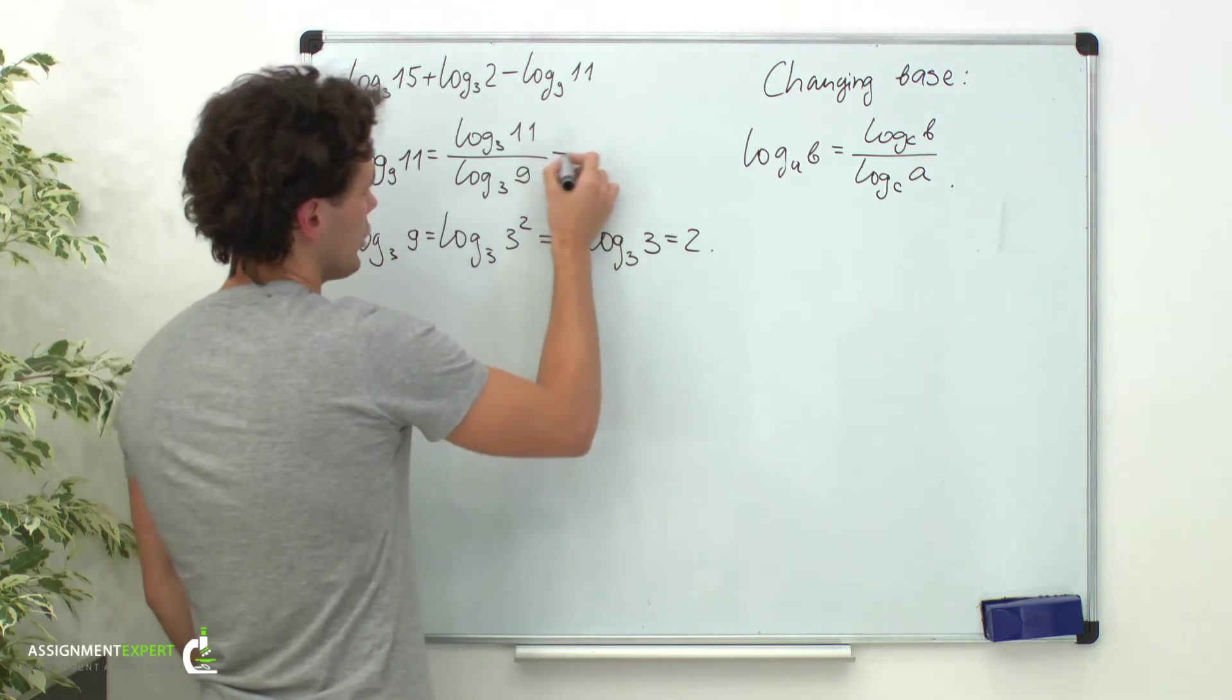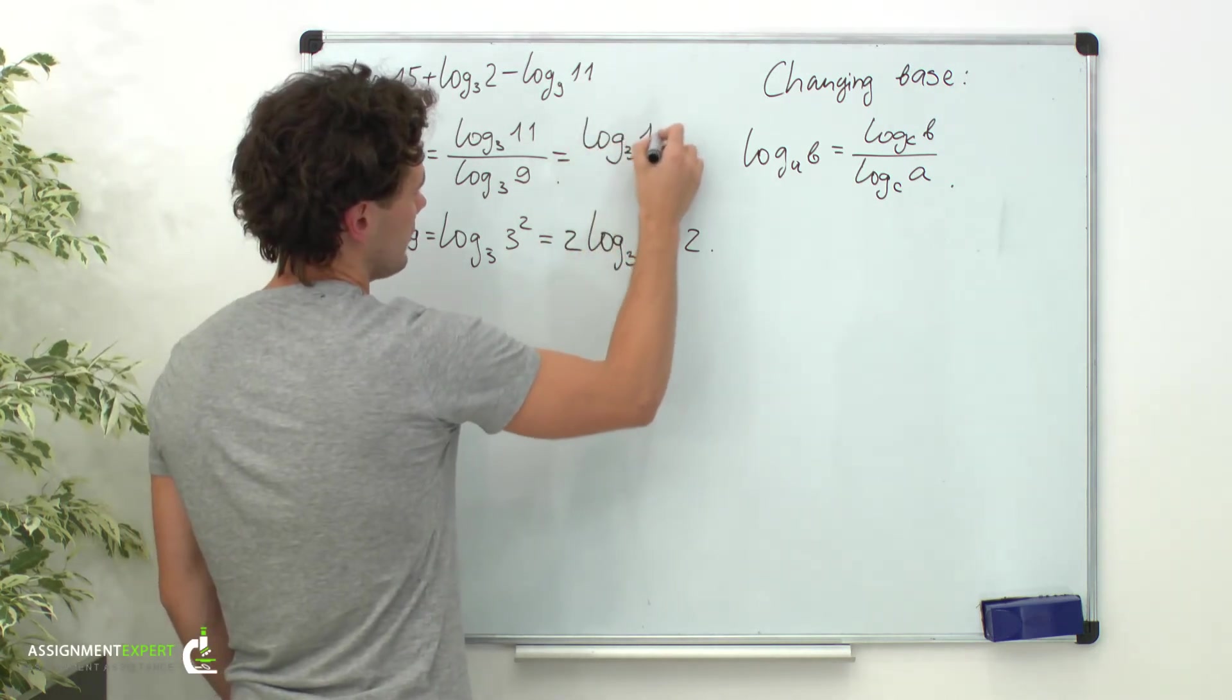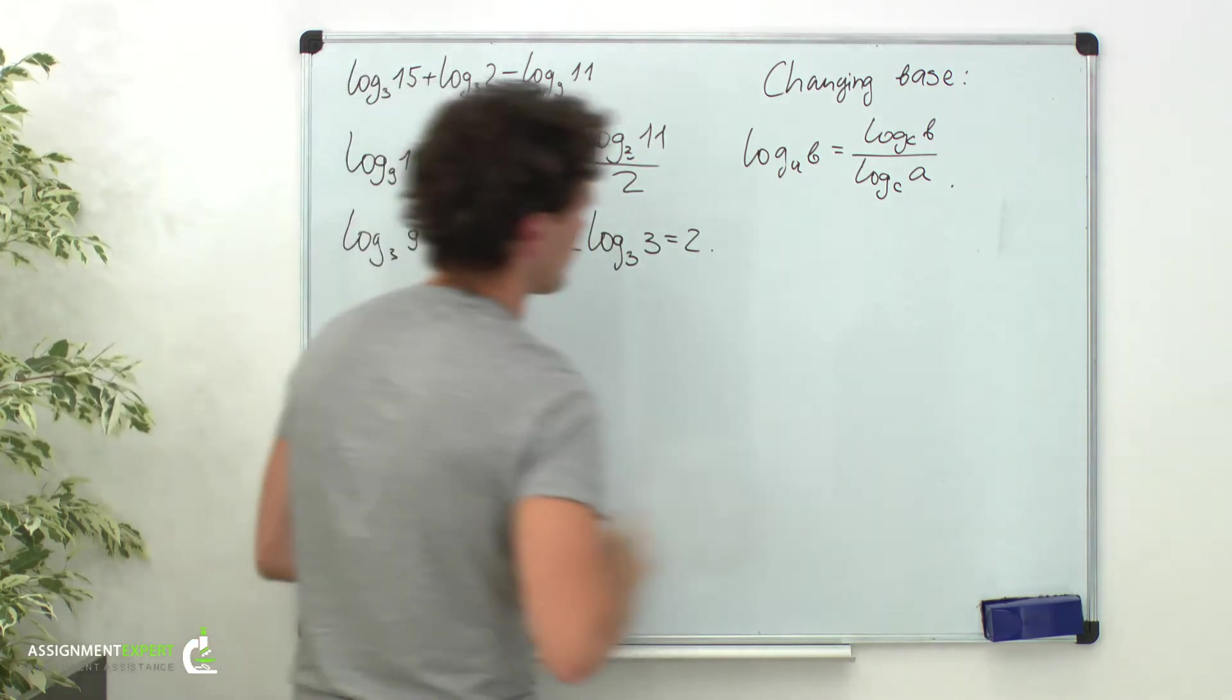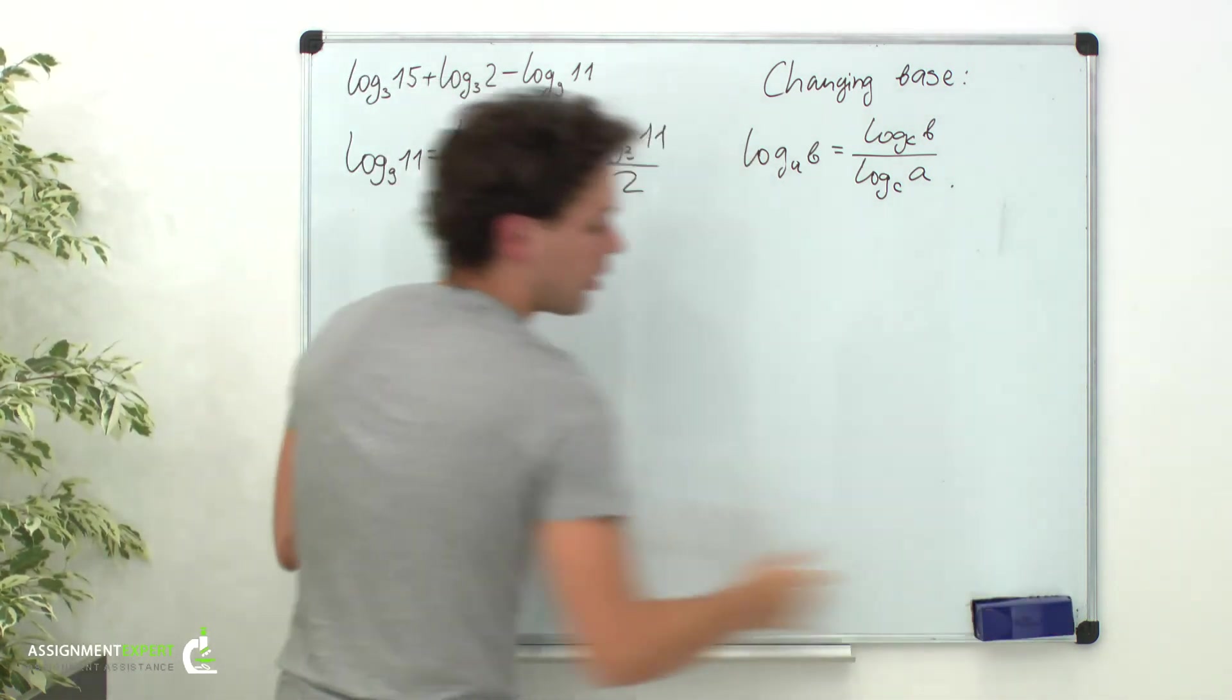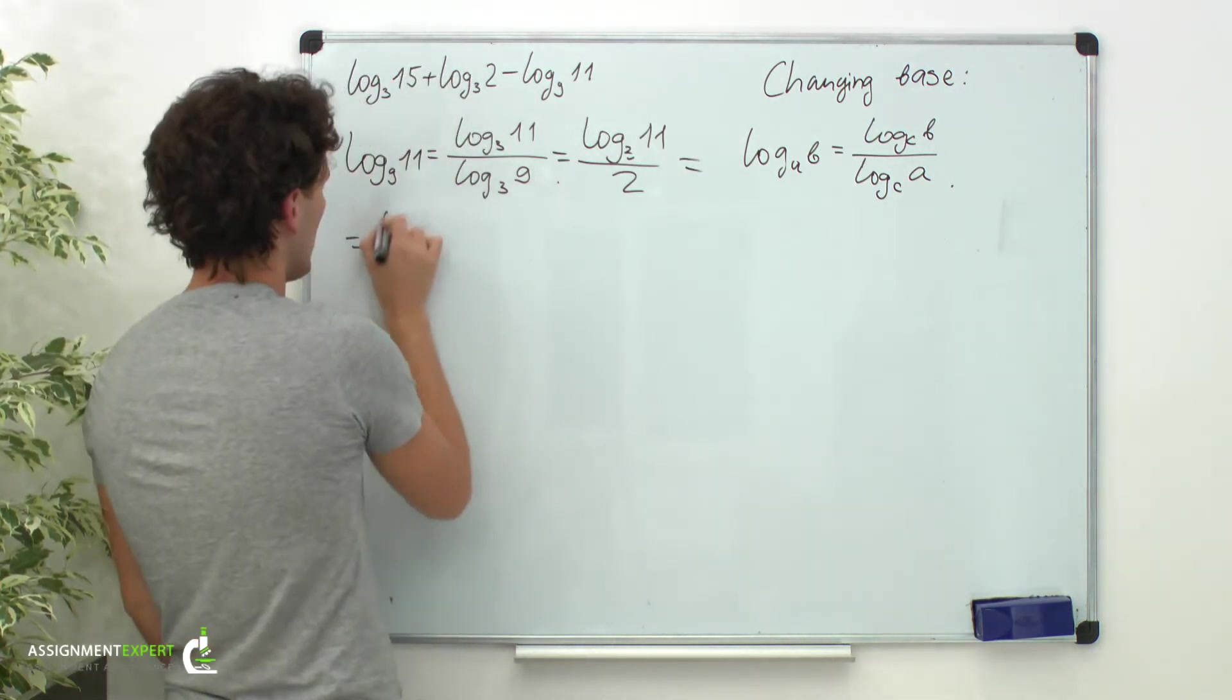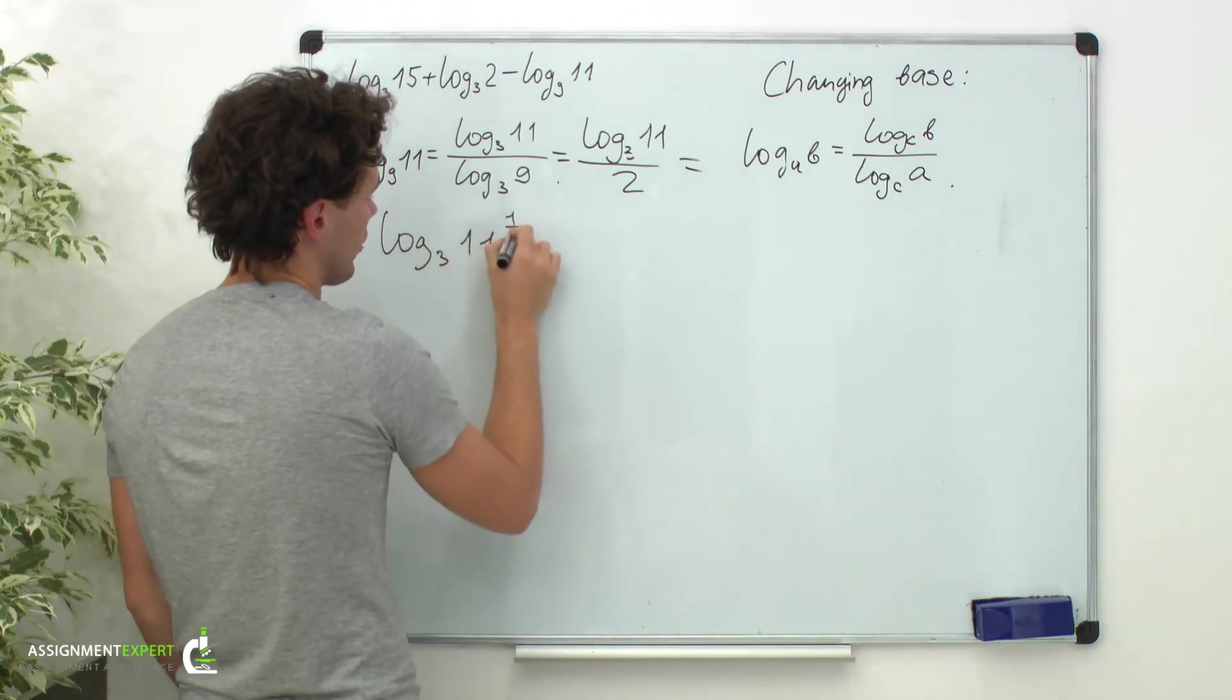So the fraction gives us log base 3 of 11 over 2. Once again we apply the power rule and we get log base 3 of 11 raised to the power of 1 half.